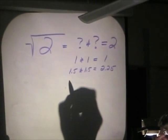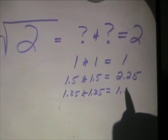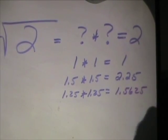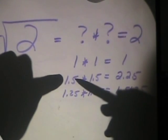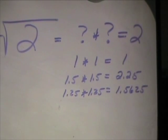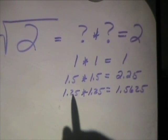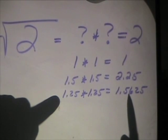Okay. 1.25 times 1.25. 1.5625. And it stops there? Okay. Alright, so that's between 1.5 and 1.25. Another suggestion. Want to try again?